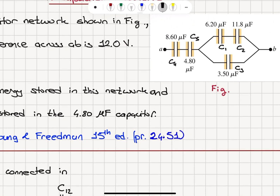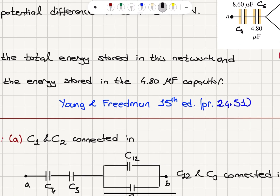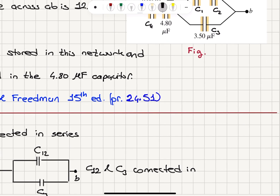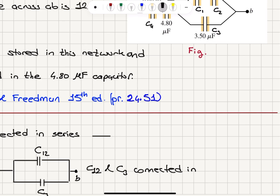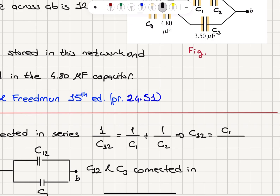So C1 and C2 are connected in series. For capacitors connected in series, the equivalent capacitance is given by 1 over C1,2 equals 1 over C1 plus 1 over C2. So the reciprocal of the equivalent capacitance equals the sum of the reciprocals. This gives us C1,2 equal to the product C1·C2 divided by the sum C1 plus C2.